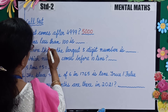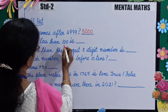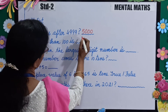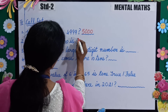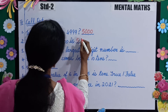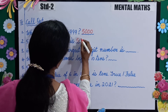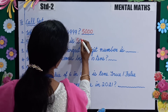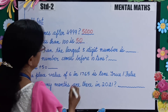Number 1: what comes after 4999? The answer is 5000. Very good. Next: 5 tenths less than 100 is? 5 tenths means 50. So your answer is 100 minus 50 is 50.